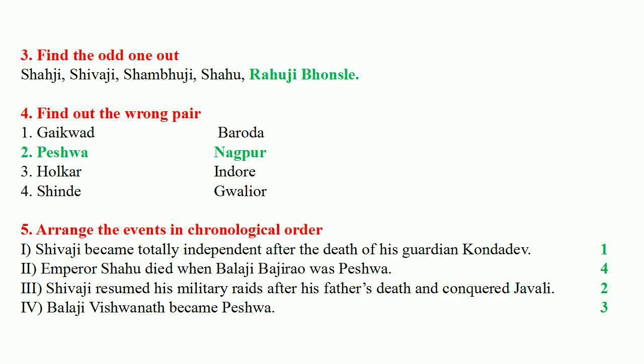Fifth question: arrange the events in chronological order. First: Shivaji became totally independent after the death of his guardian Kondadev. Second: Shivaji resumed his military rights after his father's death and conquered Javali. Third: Balaji Vishwanath became Peshwa. Fourth: Emperor Shahu died when Balaji Bajirao was Peshwa.